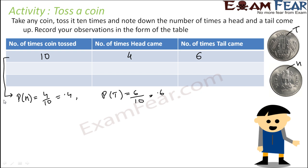But if you see, the data is not correct because we know that the probability of head and tail is each 0.5. Since it is an experimental approach to probability, it is always good to have more data. So let us perform the same activity 50 times.